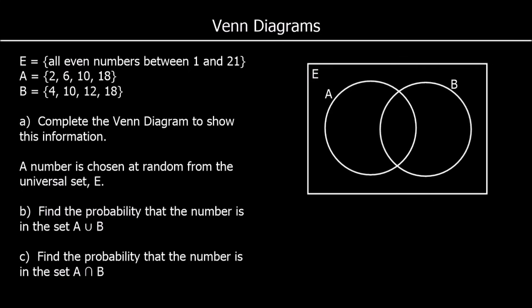We're told set A is 2, 6, 10, and 18. So in the A circle, we're going to put 2, 6, 10, and 18. B is 4, 10, 12, and 18. So in the B circle, we're going to have 4, 10, 12, and 18.